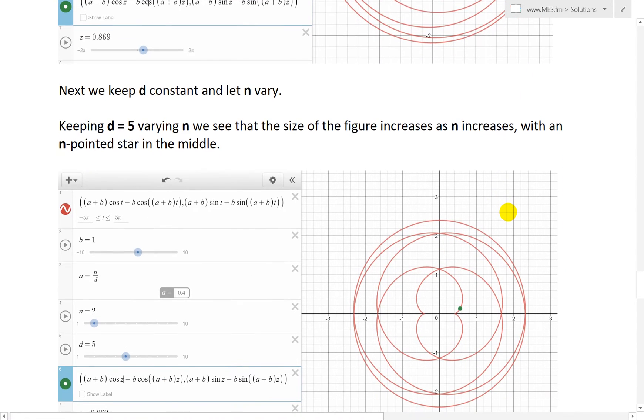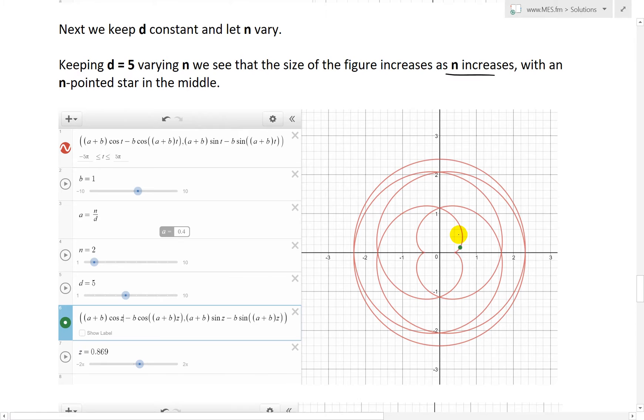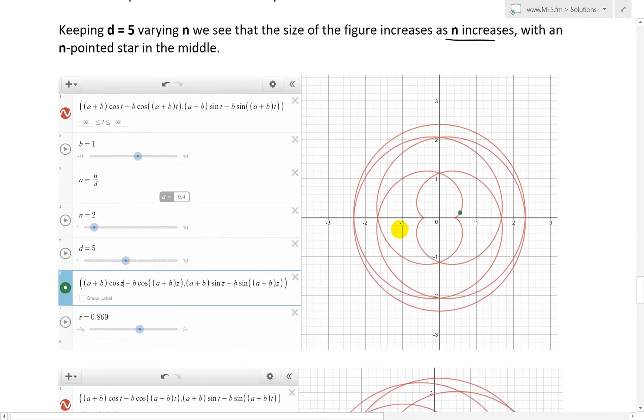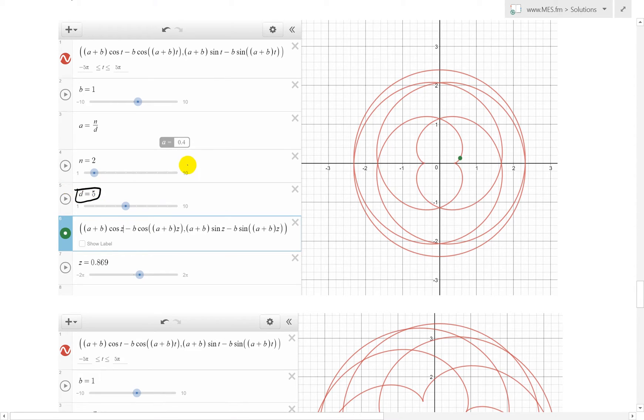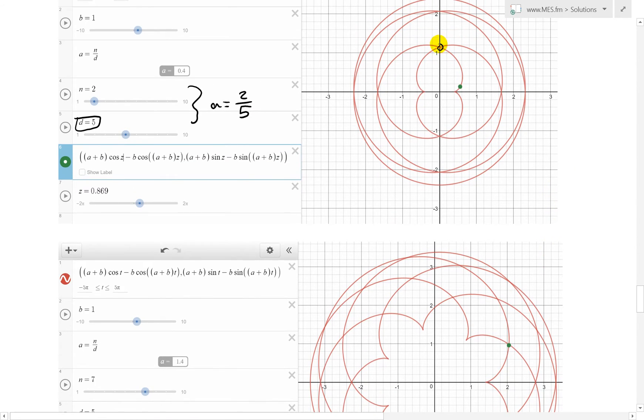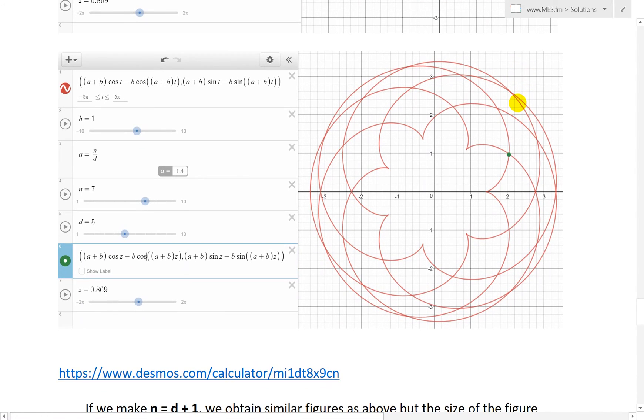Next, we keep d constant, and then if we vary n, we get shapes like this. So keeping d equals to 5 and varying n, we see that the size of the figure increases as n increases with an n-pointed star in the middle. Here is 2. So here we have n equals to 2, and we fix this one so the overall a is equal to 2 over 5, or 0.4. And then when we increase that here, we have 2 points, 1, 2, and that's because n is 2. And then here we have 1, 2, 3, 4, 5, 6, 7-sided star like that. And that's n is 7, or we have a is equal to 7 over 5.